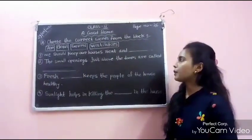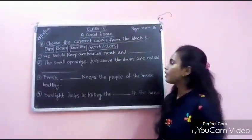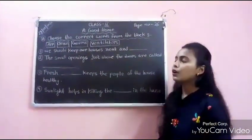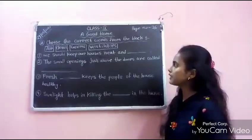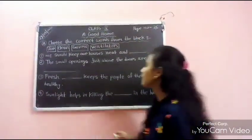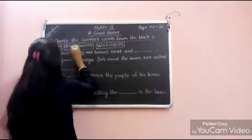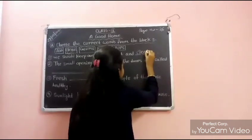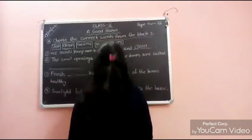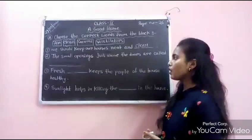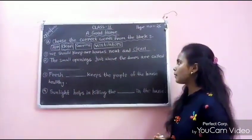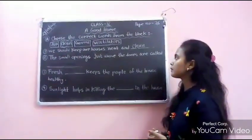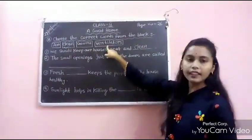Choose the correct words from the block. Number 1: We should keep our houses neat and dash — the answer is clean. Number 2: The small openings just above the doors are called dash — the answer is ventilators.